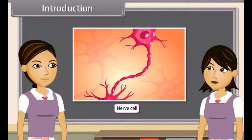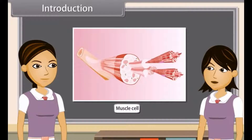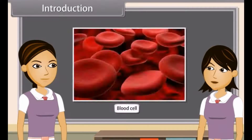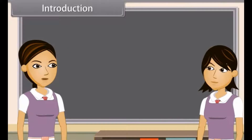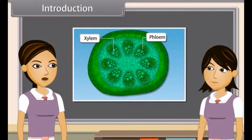Nerve cells carry messages from the brain to every part of the body. Muscle cells contract and relax so that movements are caused. Blood flows to transport oxygen, food, hormones and waste materials. Plants are also living organisms and xylem and phloem cells conduct food and water from one part to another.